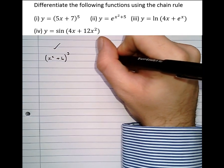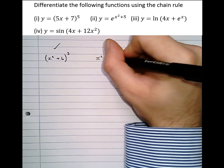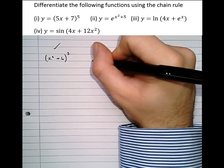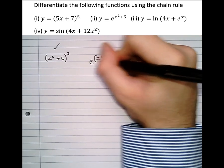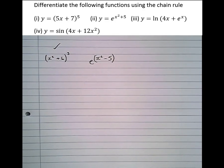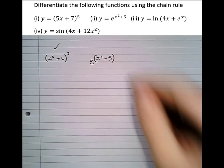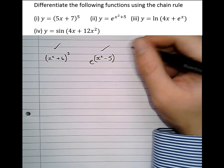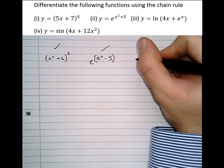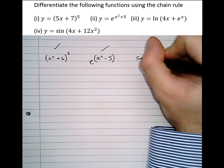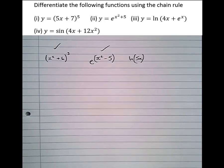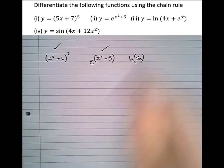If we take x squared minus 5 and we wrap an e around it — e to the power of x squared minus 5 — that's a function of a function, and the chain rule applies there as well. Similarly, if we take the function 5x and wrap a ln around it, that's again a function of a function.